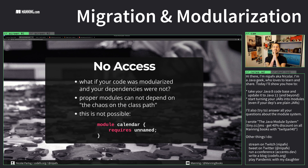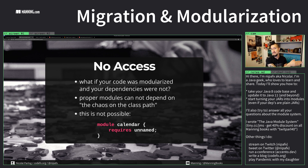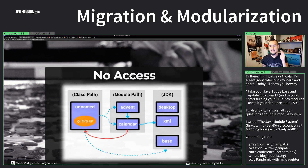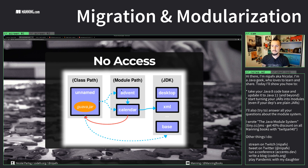The problem is: if you start modularizing your code, you have to put your dependencies into requires directives — your module requires your dependency. But if your dependency is not yet a module and you put it on the class path, it's in the unnamed module. You cannot write 'requires unnamed' because you reference a module by its name — and the unnamed module's name is not 'unnamed', it doesn't have a name. You cannot reference it, you cannot require it. So you cannot put Advent and Calendar into proper modules on the module path and then reference a dependency that's on the class path.